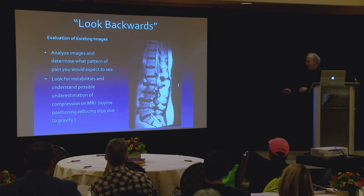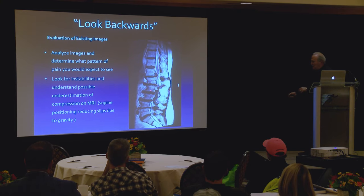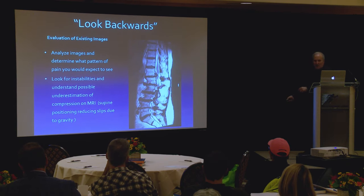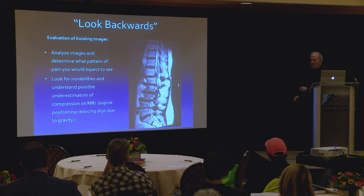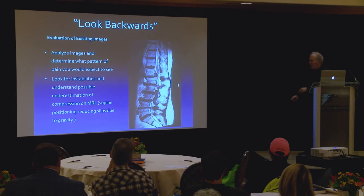You have to be able to look backwards: look at the images and try to determine what pattern of pain you'd expect. These discs show multi-level disc resorption. Do you see a flat back? Could they have a flat back stance? Do you see conus compression — could they have bowel and bladder involvement? On the lateral view, you'll see foraminal stenosis at L2-3 and L3-4 — could they have pain dynamically radiating down their leg with standing and walking? This is how you use the tools to figure out what's going on.